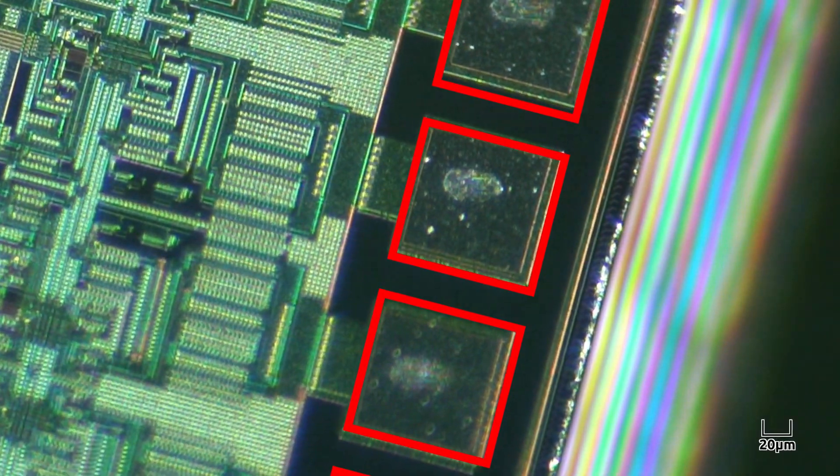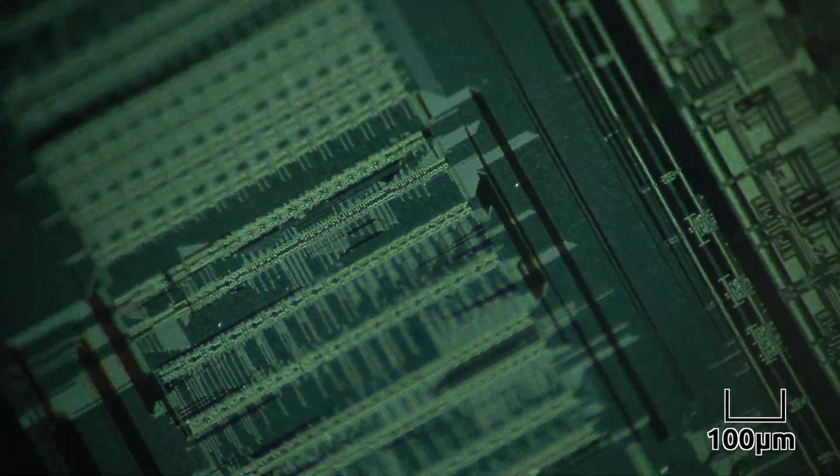These square parts are the bond points that will connect the chip to the outside world. The individual lines that you see here are traces that carry data and power within the chip.